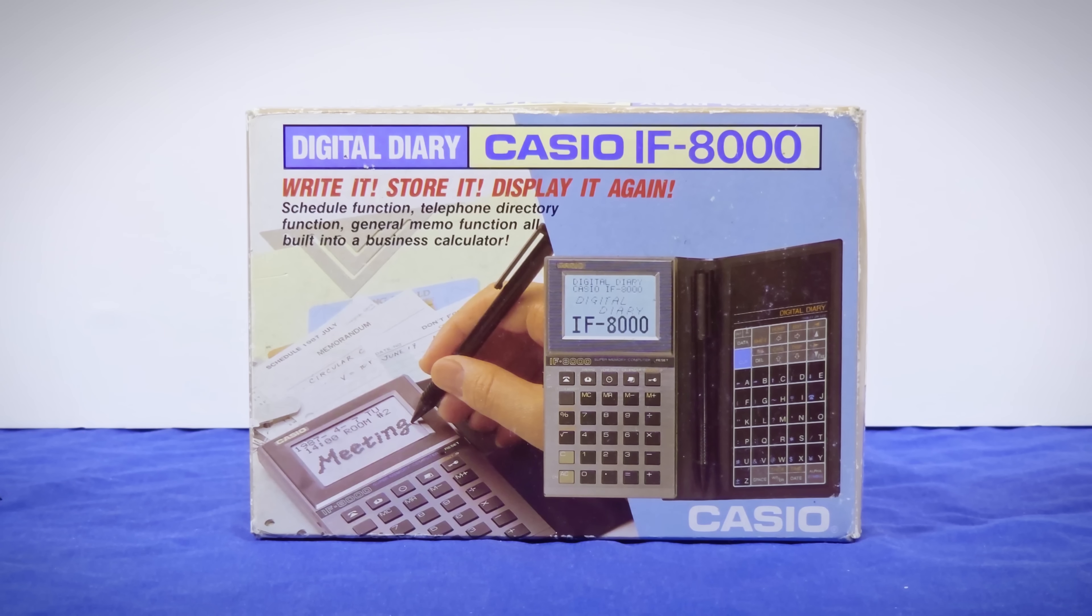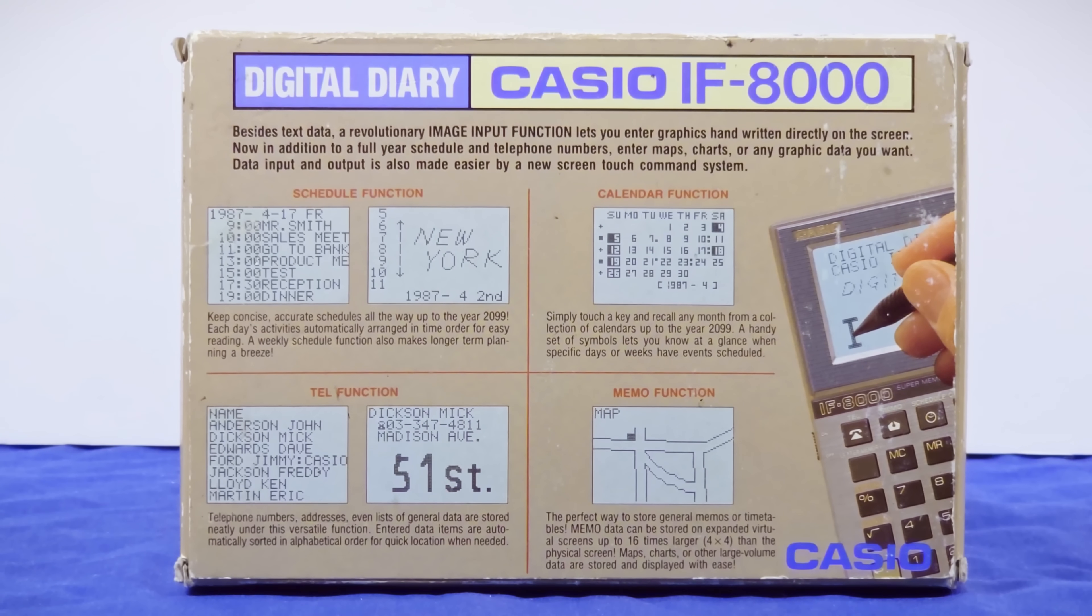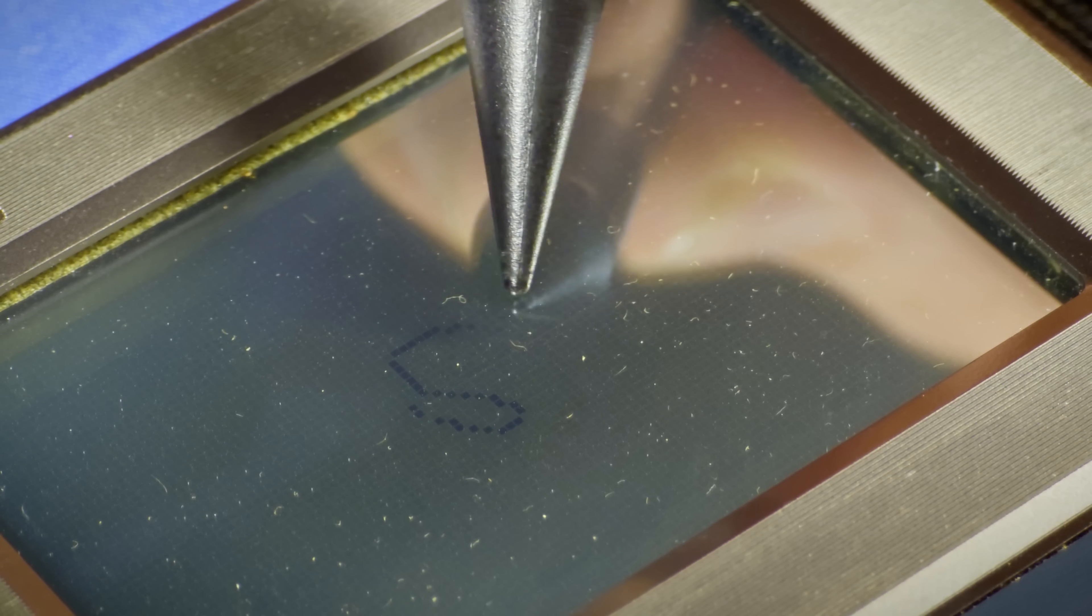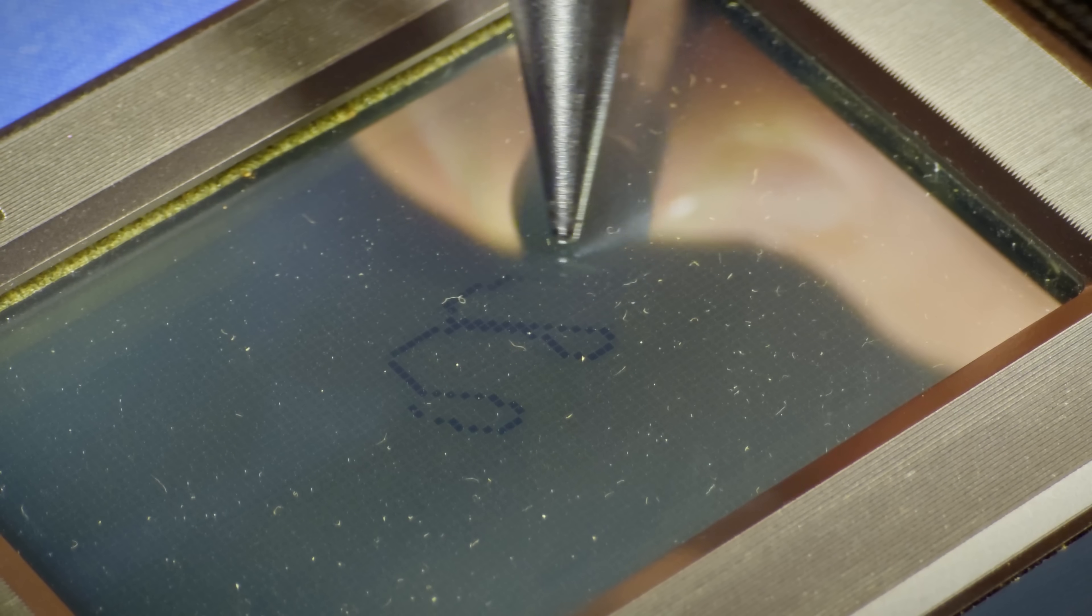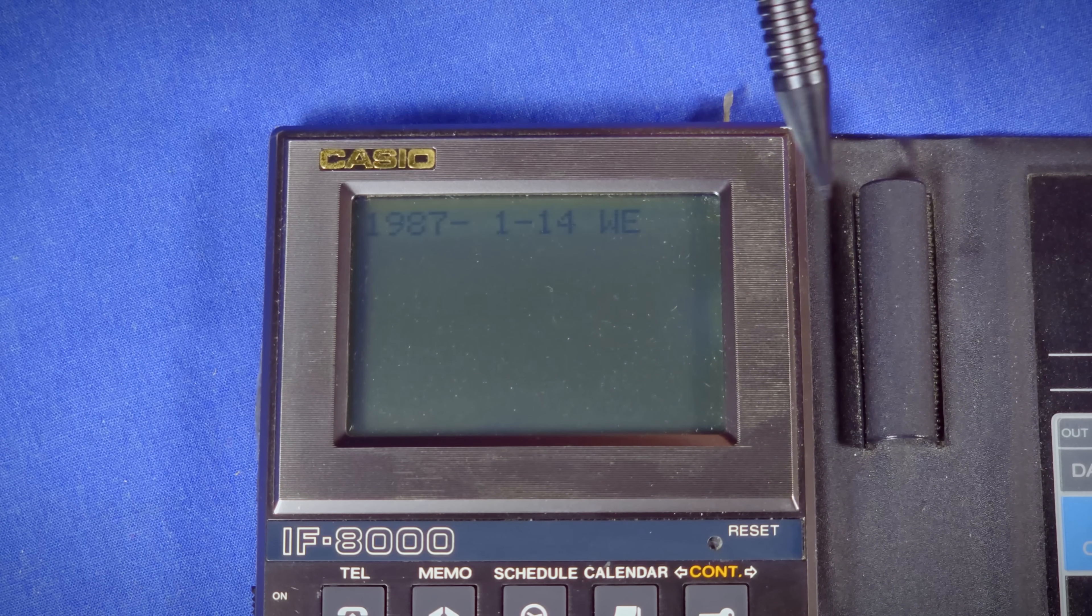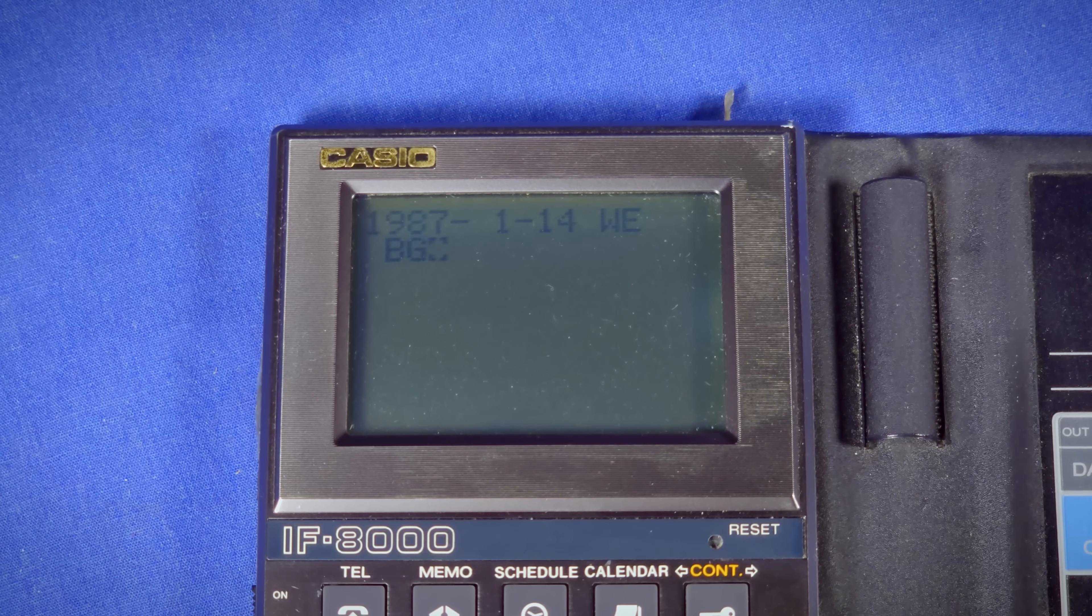Casio released the IF8000 as a digital diary. It was meant for note taking, storing contacts, and keeping your schedule in like other PDAs of the time. It also used touch to input data, but unlike the devices before it, each pixel in the display has its own touch cell directly above it. This is used to create menus, navigate through dates, and arbitrarily draw notes on the screen.